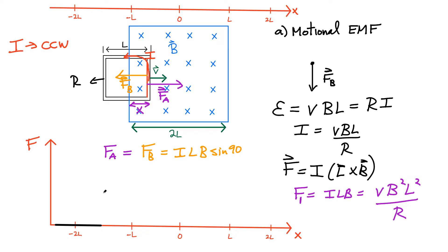That force F1 exists from when you first enter the magnetic field region all the way until the loop is completely inside. You have to apply that force in order to get this loop completely inside the field region. Now I want to look at this same problem from the perspective of the change in magnetic flux. Once the loop enters the field region, the magnetic flux inside the loop is changing, and whenever you change the magnetic flux you induce a current. We can use the change in magnetic flux to calculate the current and the force.